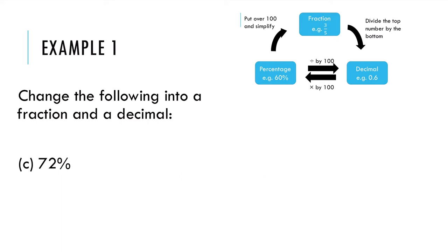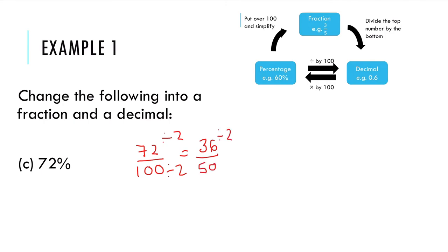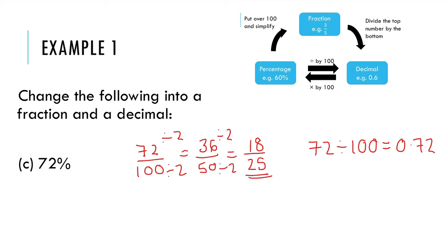For C, change the following into a fraction and a decimal. Now, 72 over 100 — you can do this in a calculator to simplify, or you can spot that 72 is a multiple of 2, it is even. So you could divide down by 2 first to get 36 over 50. You can see that again these are both even numbers, so let's divide down by 2 again, and you can see that this is us finished. Next we want to change that into a decimal. So we take the 72 and divide by 100 to get 0.72. It is good practice to do it non-calculator if you can.